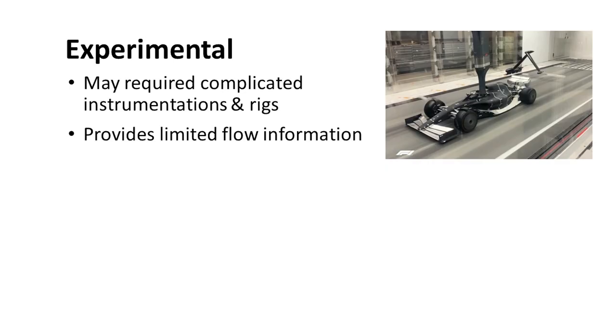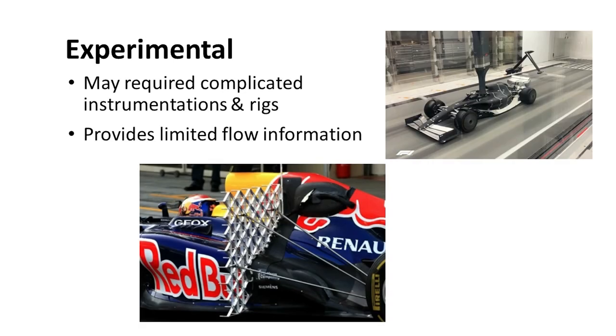For example, the F1 team may use pressure probes to obtain the flow properties in this particular region, but they can't perform concurrent measurements at a plane in the front or at the back of this region, because doing so will cause interference between the two sets of probes.